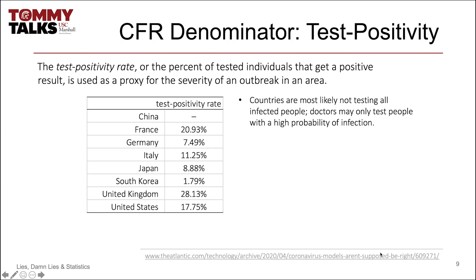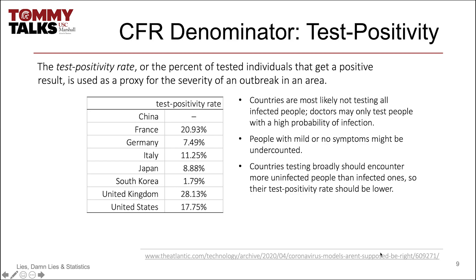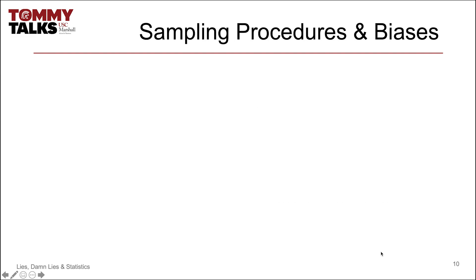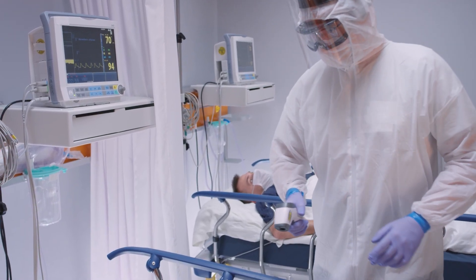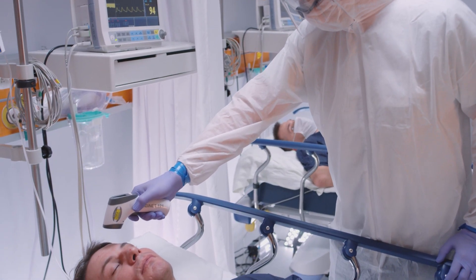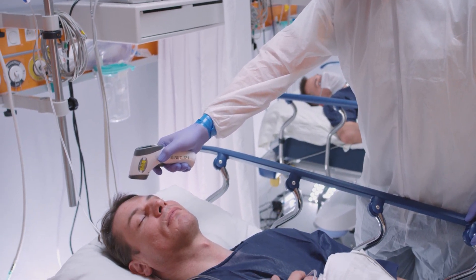Countries are probably still testing only more extreme patients — those with a higher probability of infection. People who are asymptomatic or with mild symptoms may be drastically undercounted. The more testing that is done, the more uninfected people will be discovered, therefore leading to countries with lower test positivity rates. Some people even avoid doctors or never get sick enough to seek a test and are being left out of the measure. Virus testing requires a plan for sampling individuals. The gold standard is random sampling, but this is much more difficult to implement than a convenient sample, where testing is done on readily available subjects.